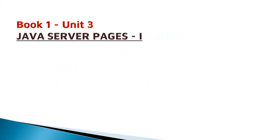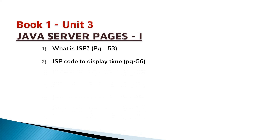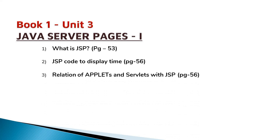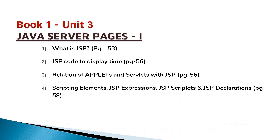Now coming to Book 1 Unit 3, that is Java Server Pages Part 1. You should know what is a Java Server Page and why we use JSP — please go through page number 53. One program is given on page number 56; it is a very simple program and I would recommend you execute it on your computer. A question will come like 'write a JSP program to display time' — it is a very simple and basic program. Next topic is the relation of applets and servlets with JSP, available on page number 56.